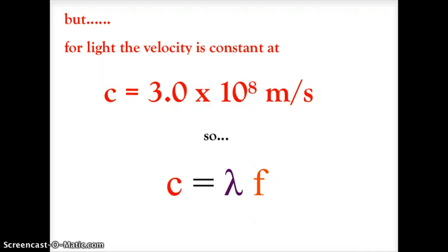For light specifically, we replace v with c — the same c from Einstein's E = mc². The speed of light is a constant: c = 3.0 × 10⁸ meters per second, which is 300 million meters per second. Since we're dealing with visible light traveling at this constant speed, our equation becomes: c = λf, where c is the velocity, λ is wavelength, and f is frequency.